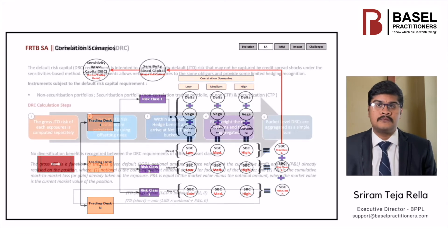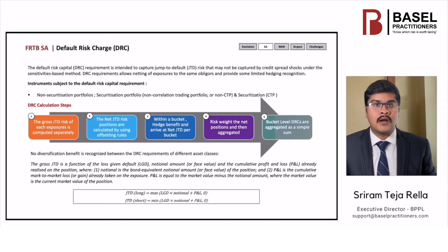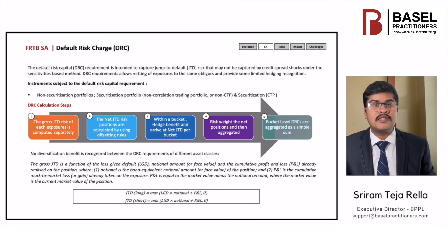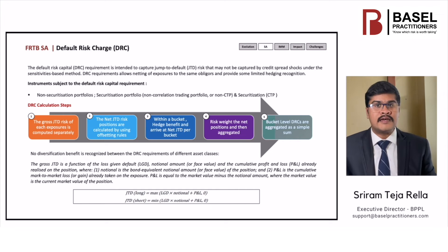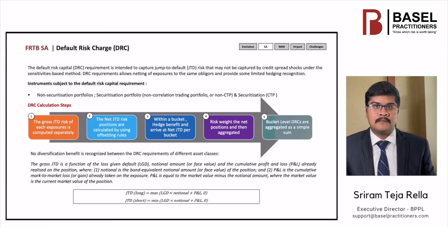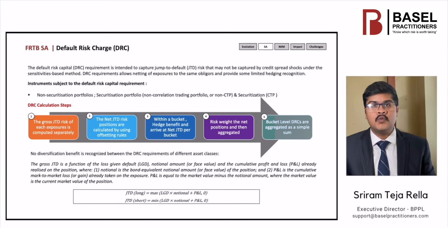What is DRC? Default risk is the risk of loss on account of default of an issuer or obligor. Within the sensitivity-based capital under the credit spread risk class, we captured only migration risk and not the jump to default. Hence, default risk charge is required in addition to sensitivity-based capital charge. Jump-to-default (JTD) is the risk of a sudden default. JTD exposure refers to the loss that could be incurred from a JTD event. In credit risk, expected loss is computed as PD × LGD × EAD. Here, PD is 100%, so it is simply LGD × EAD, which is the notional principal plus P&L.